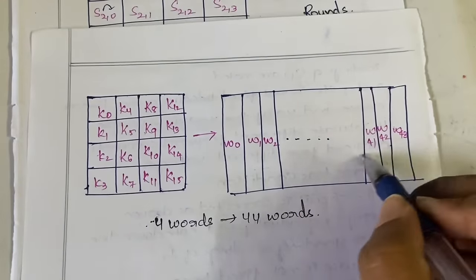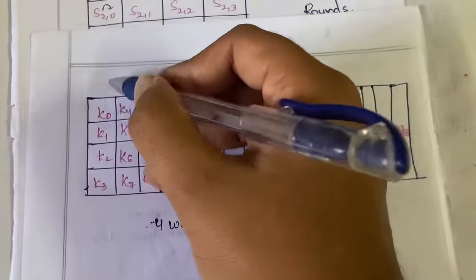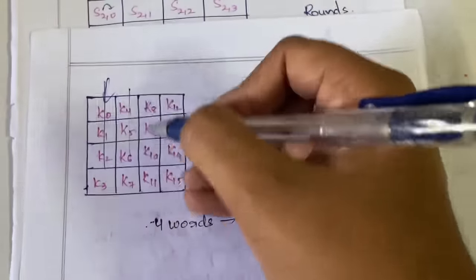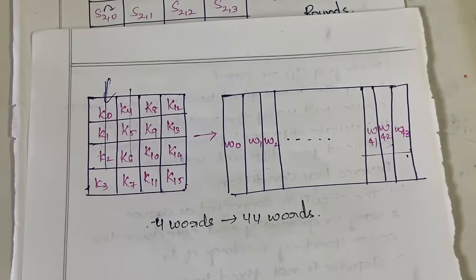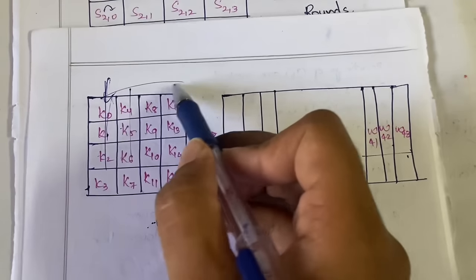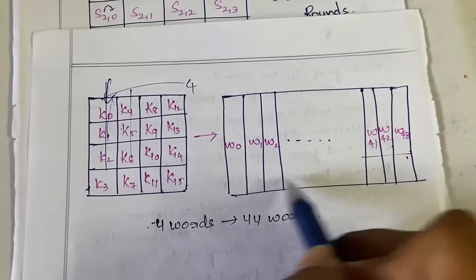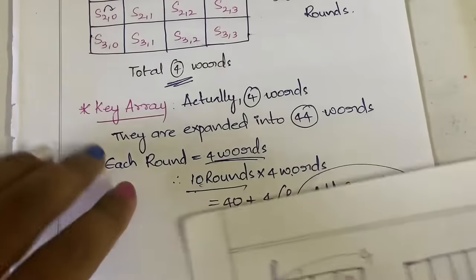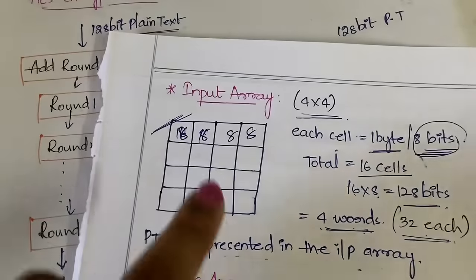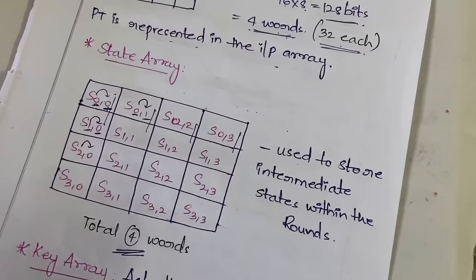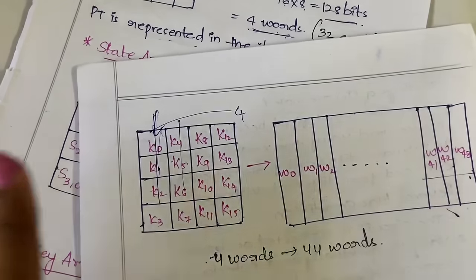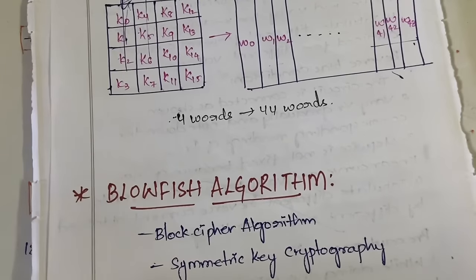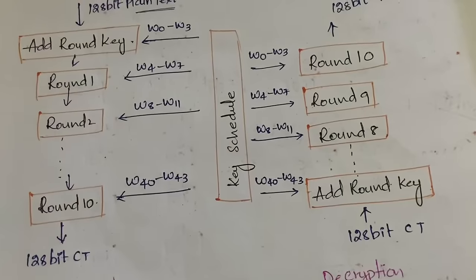The expanded key array looks like this: we have four original words expanded into a total of 44 words. Each column represents one word. So these four original words are expanded into 44 words in the key array. And that is why we need 44 words. So we have three arrays: the input array, the state array, and the key array — and now let us see how the overall process goes on.